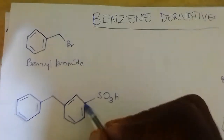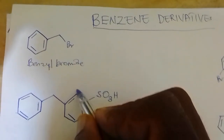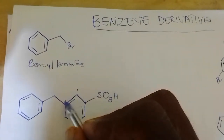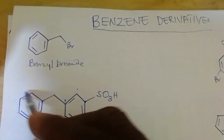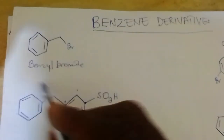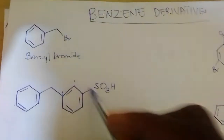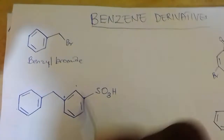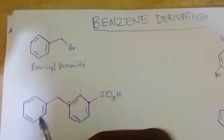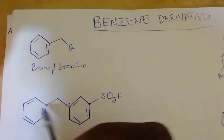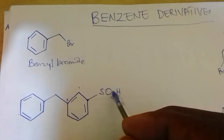So here is carbon 1, then 2 and 3. This benzene is bonded to position 3 of the benzene sulfonic acid, so it becomes 3-phenyl benzene sulfonic acid.